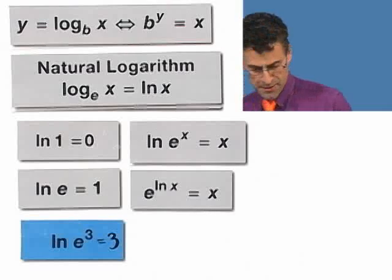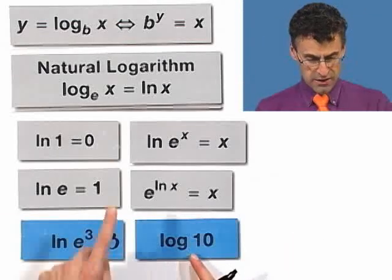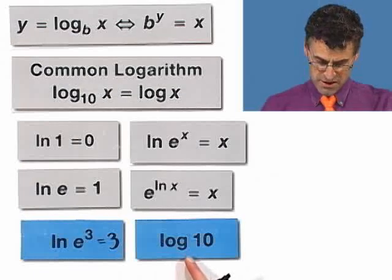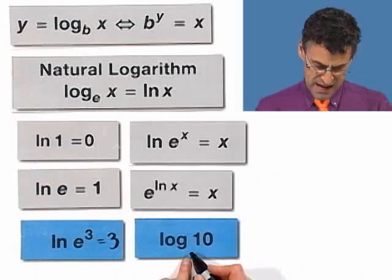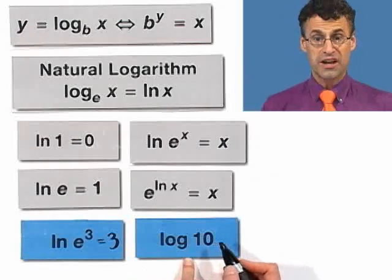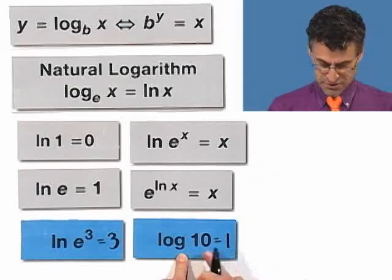Let's do another one. How about log of 10? Well, there's nothing written underneath there, and it's not the natural log. That's the common log. So there's an invisible 10 there. That means log base 10 of 10. Well, let's think about that. 10 to what power equals 10? Well, 10 to the first power. So this must equal 1 because 10 to the first equals 10.